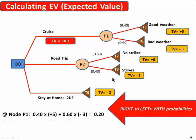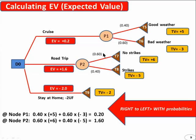For the road trip, we can do the same: 0.6 times six plus 0.4 times minus five is plus 1.6. And finally, for stay at home, we have the simple minus two.